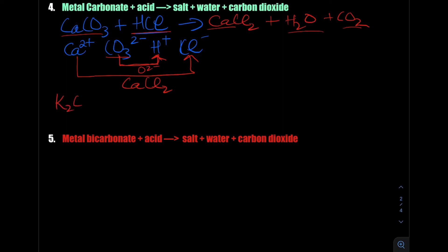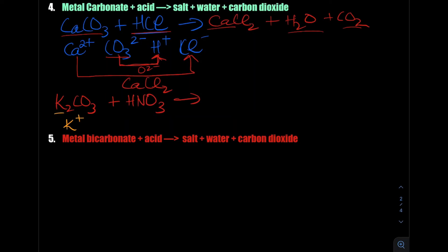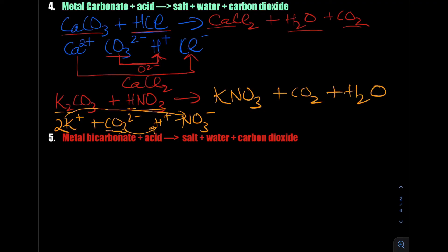Let's take a second example: potassium carbonate reacting with nitric acid. Potassium is in group 1 but there are two of them (K₂), and carbonate is the polyatomic ion CO₃²⁻. From nitric acid there's H⁺ and NO₃⁻. There's an ion exchange between the potassium ion and the nitrate, forming KNO₃ — potassium nitrate — as the salt, plus carbon dioxide. The remaining oxygen bonds with hydrogen to make water.